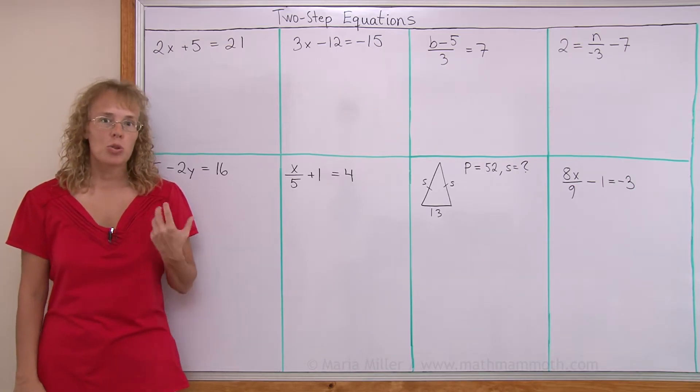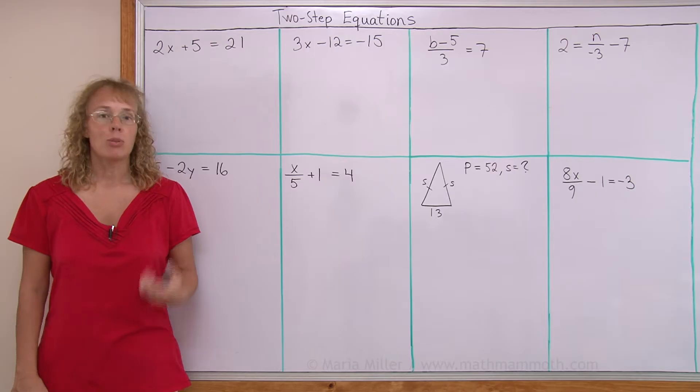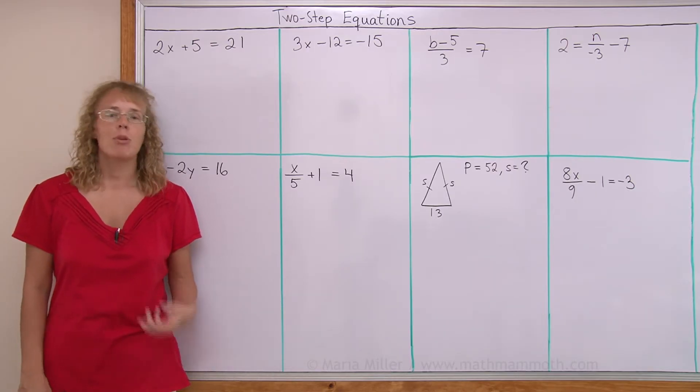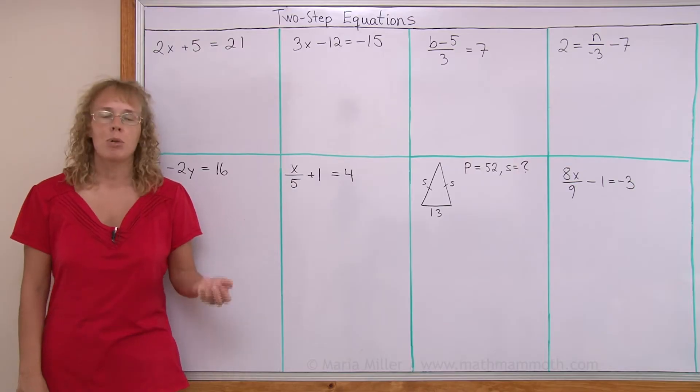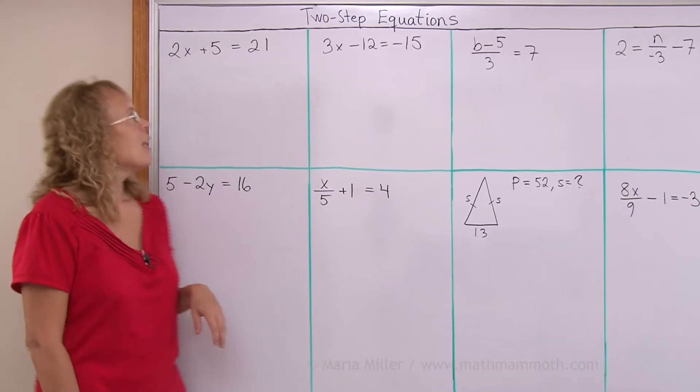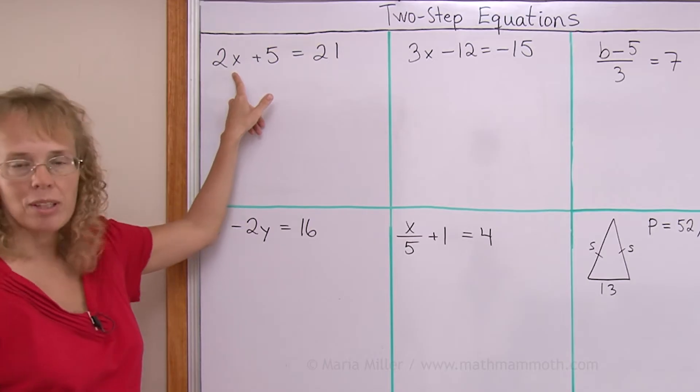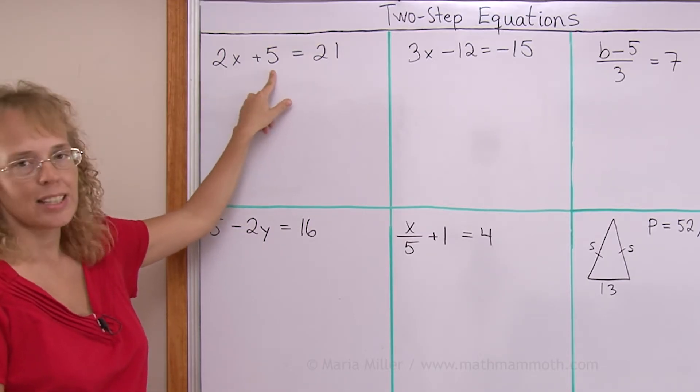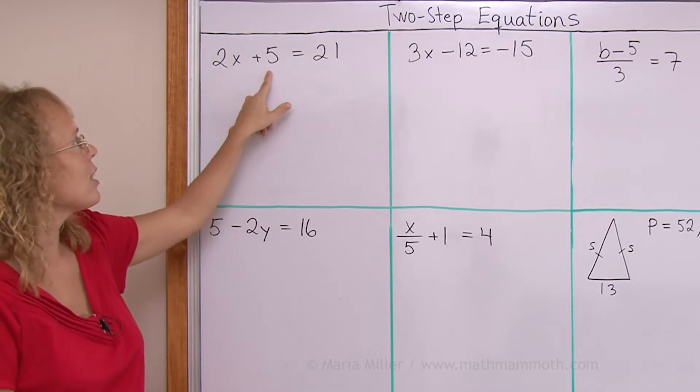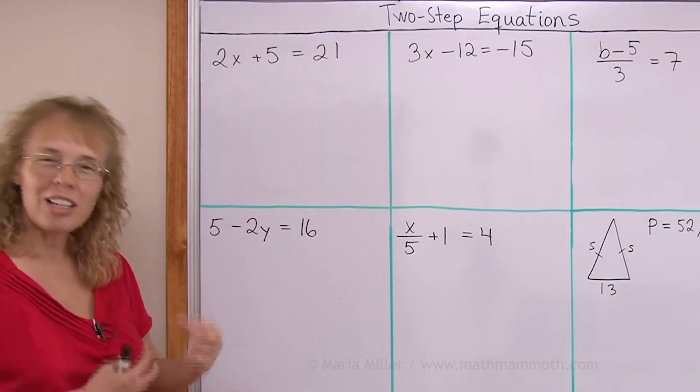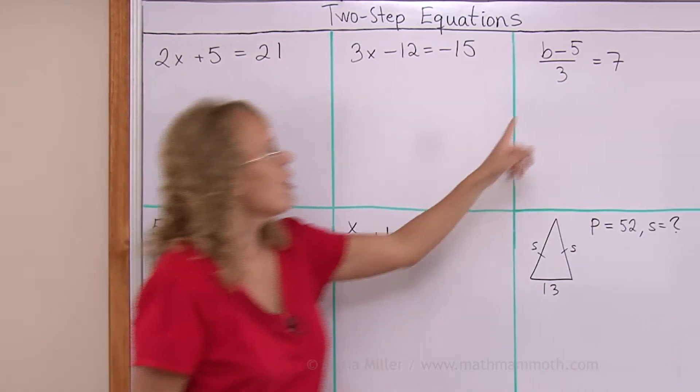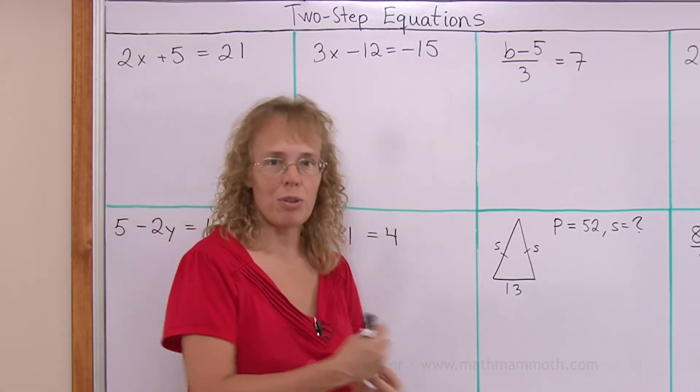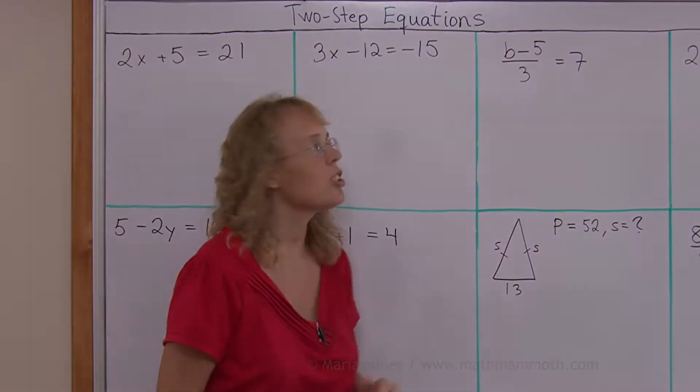It means that there are two operations we need to do to both sides of the equation, such as maybe subtract something from both sides and then divide both sides by something. For example, the unknown is multiplied by two and then five is added. So there's both multiplication and addition that has happened and we need to undo both of them. Over here there's subtraction and there's division. We need to undo both of them so there's going to be two steps into solving the equation.